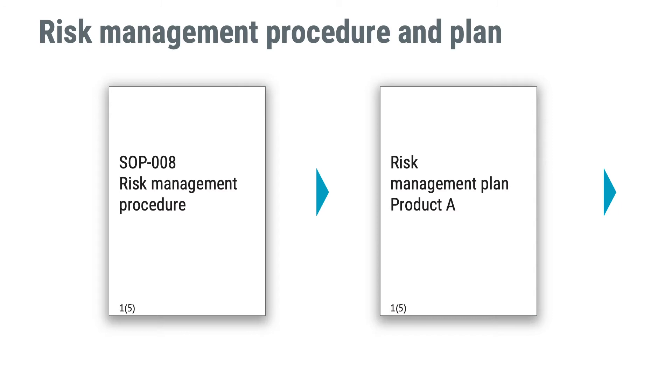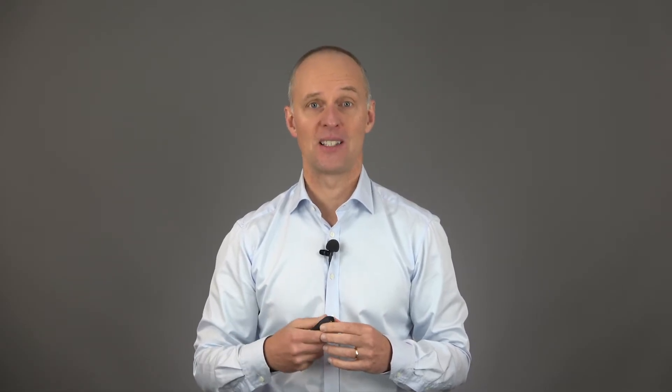Firstly, you should have a procedure in your company that tells you how to work with risk management. The procedure in turn should require you to make a plan for the risk management work to be done for a product or product group. The plan should outline who is responsible for what. Both notified bodies, the FDA, and ISO 14971 require people performing risk management to be competent, and having records proving that competence is also a requirement — for example, a course certificate.